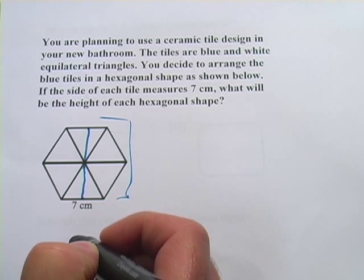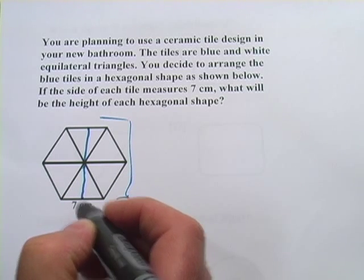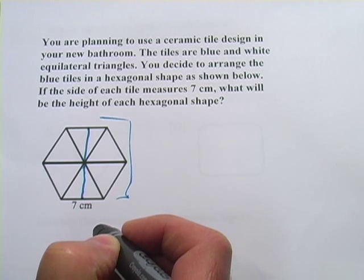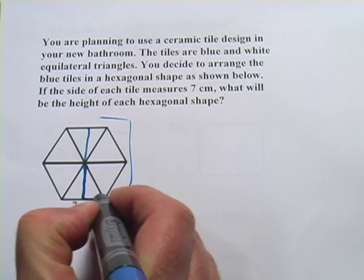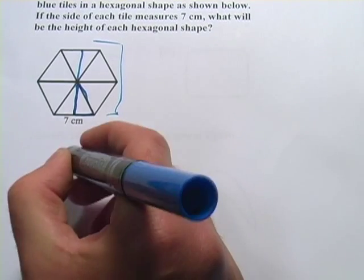And when I do that, I split these equilateral triangles into two 30-60-90 triangles. This little triangle in here is a 30-60-90 triangle. Let me just pull this one that I've created here down so we can work with it a little more up close.